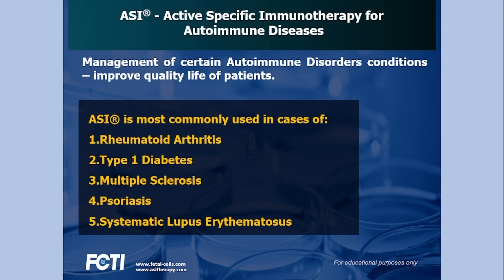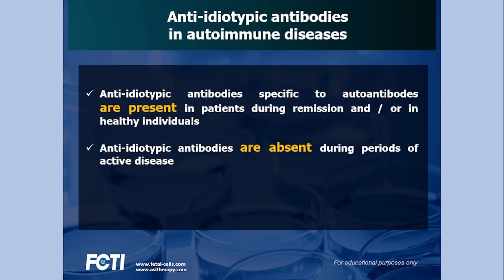In this case, the role of active specific immunotherapy is to reduce the production of anti-idiotypic antibodies by adding immune-activating substances to the autologous blood collected, to convert the autoantibodies to specific harmless immunogens — molecules capable of eliciting an immune response. Anti-idiotypic antibodies specific to autoantibodies are present in patients during remission and in healthy individuals.